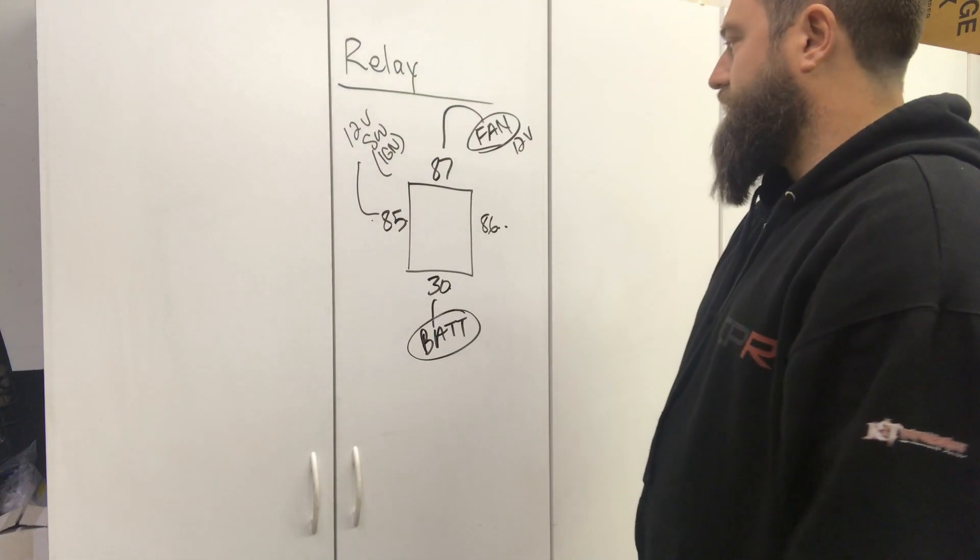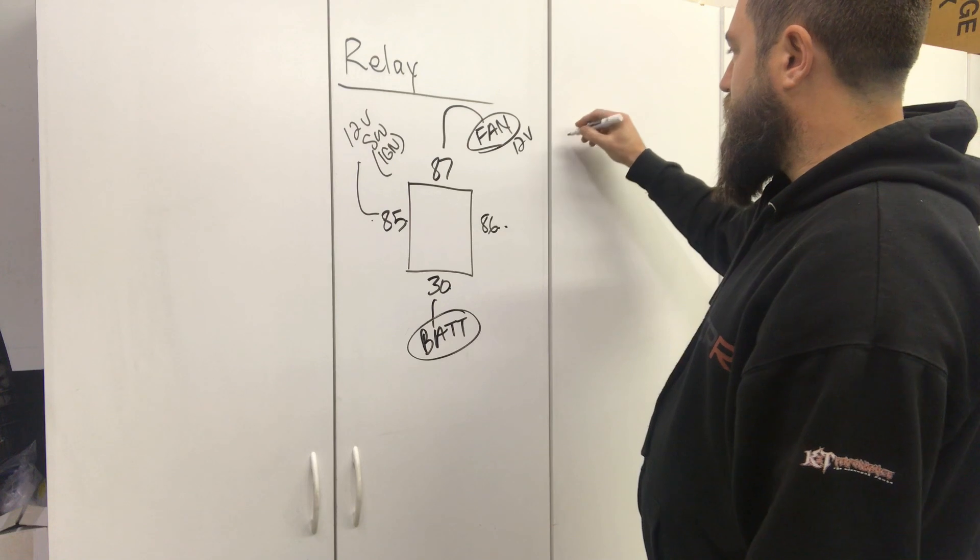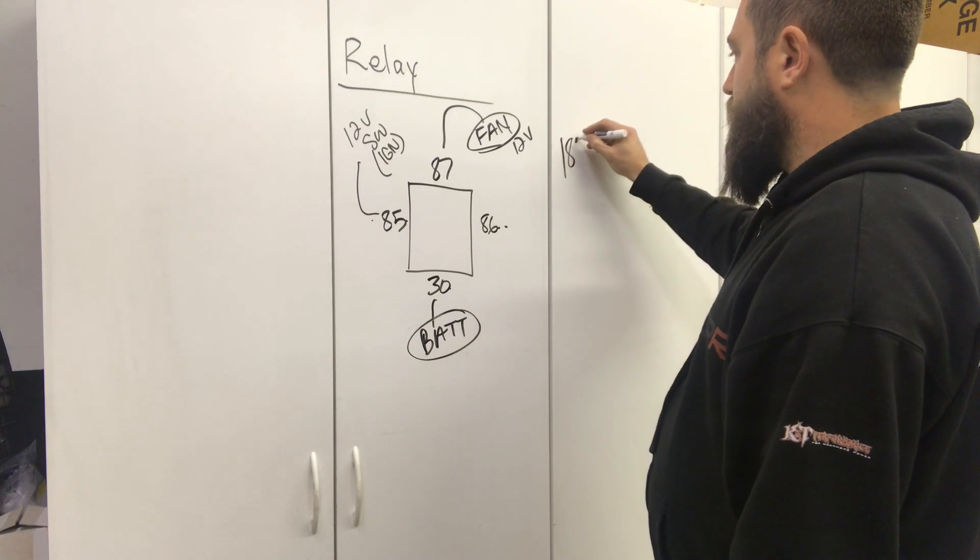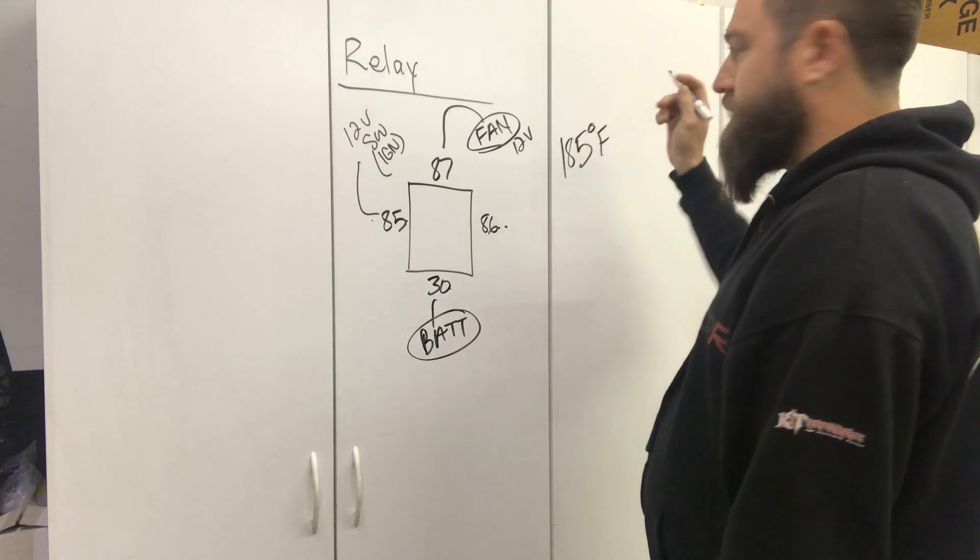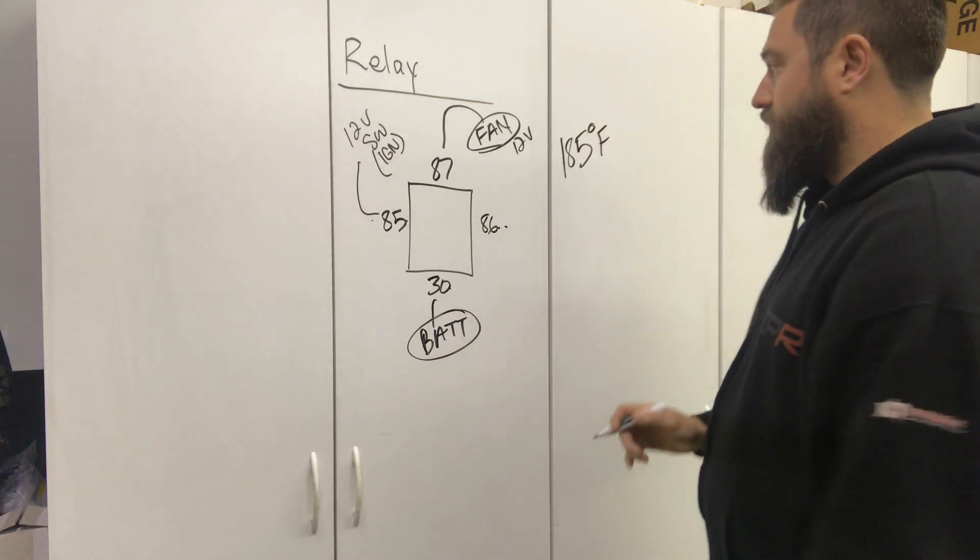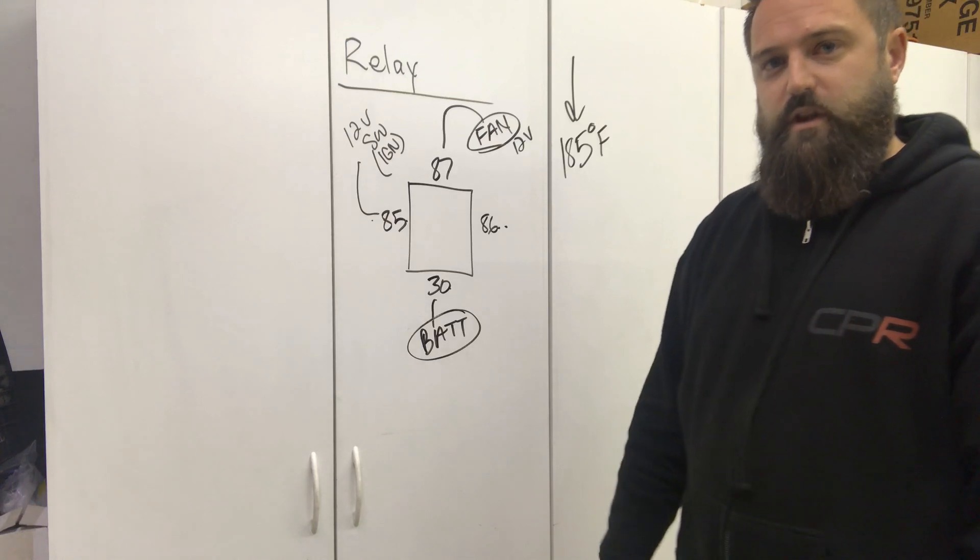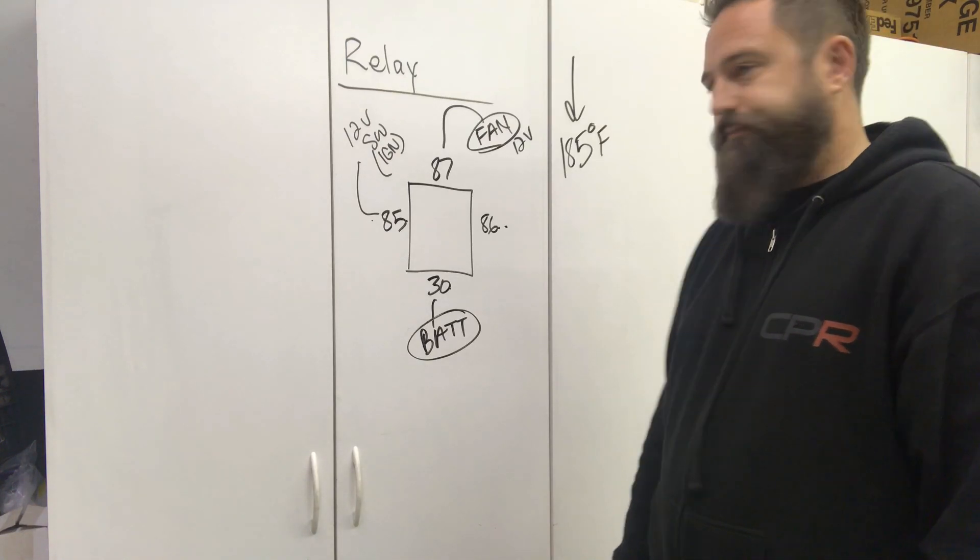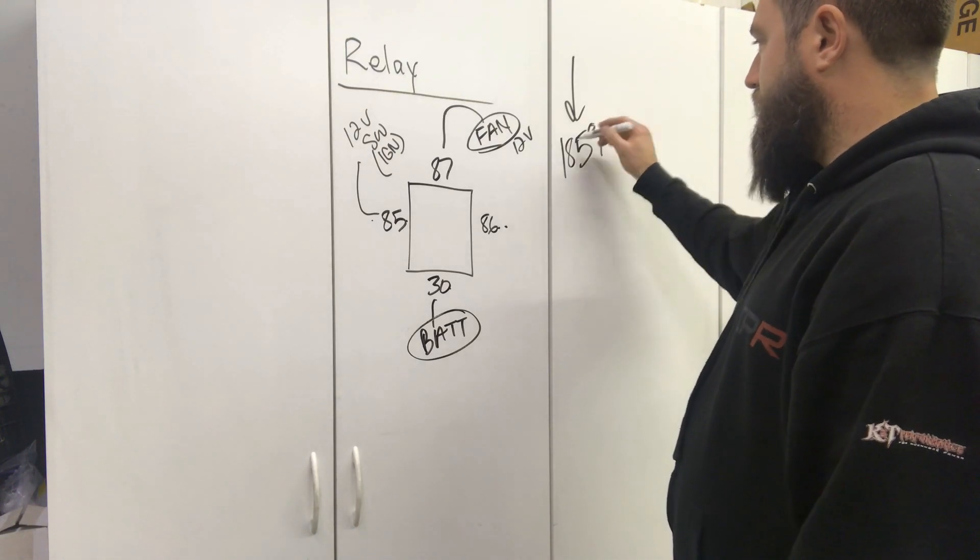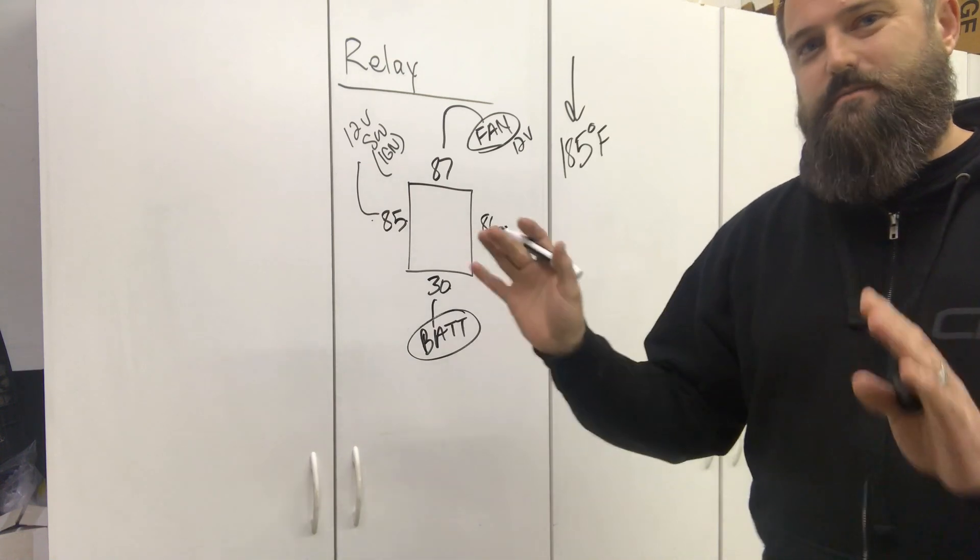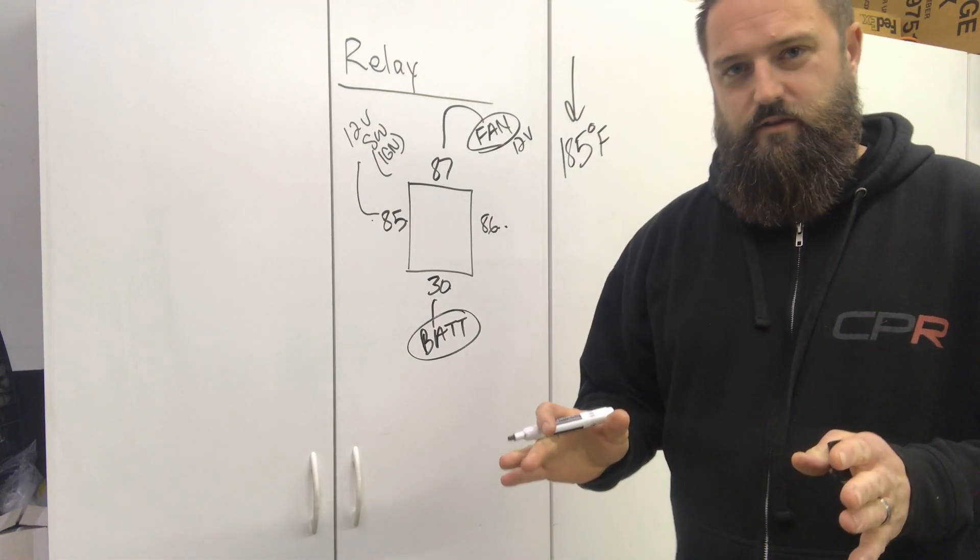Let's say in our ECU we have this cooling fan. We want to turn it on at 185 degrees Fahrenheit. We can program the software to do that and utilize one of the outputs in the ECU. This output, we're going to nine times out of ten use a ground to come out of the ECU.